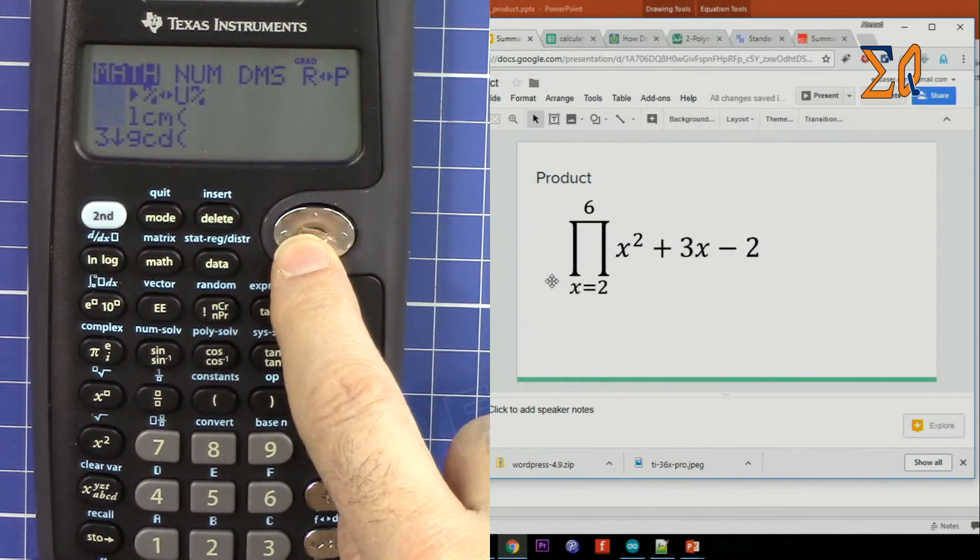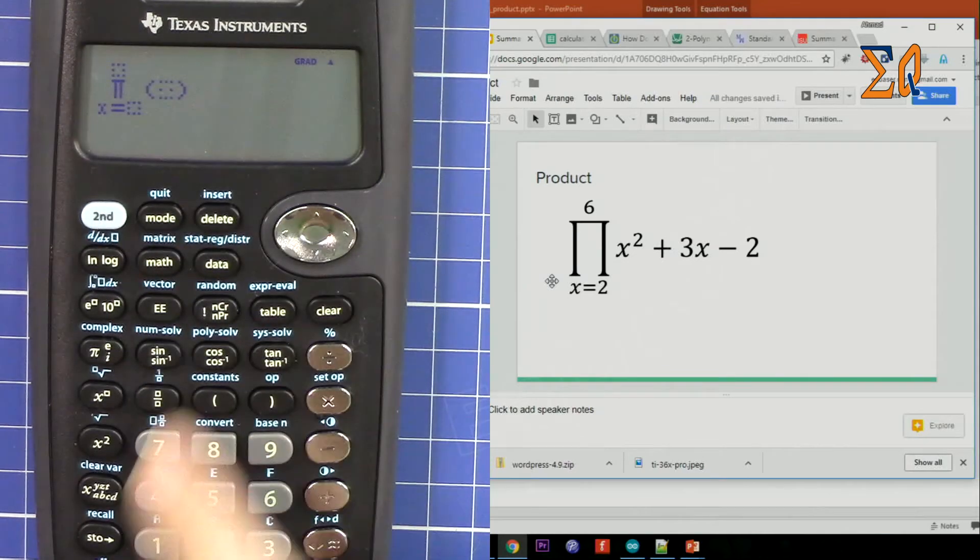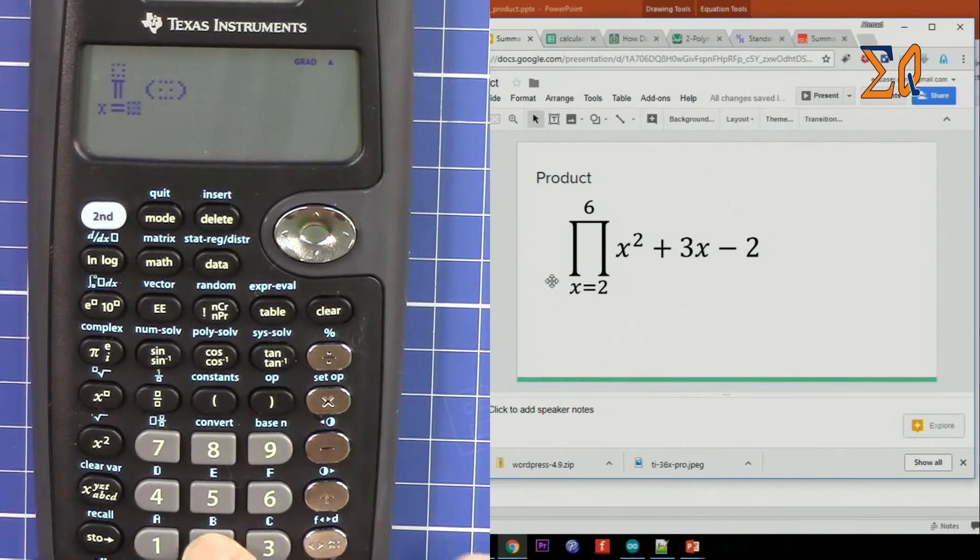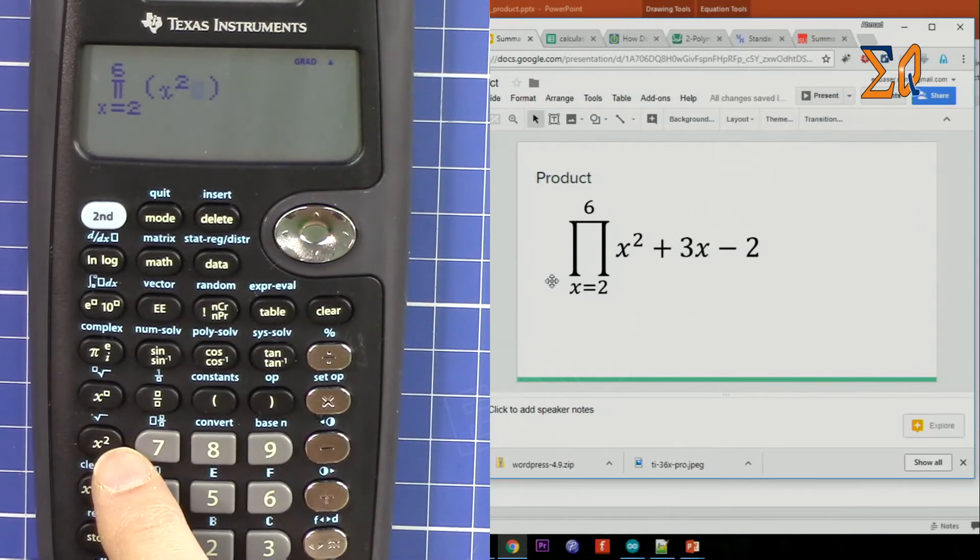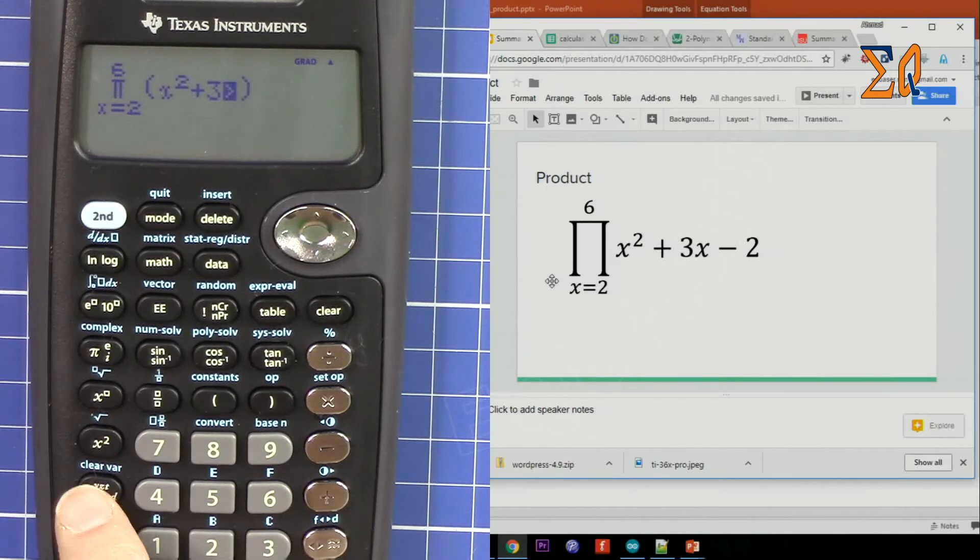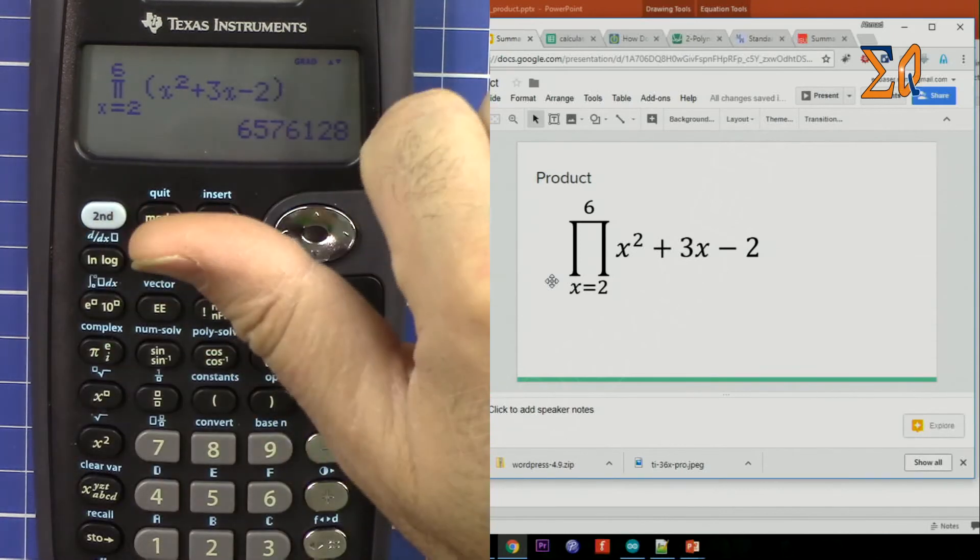Now the sign is here. So x is equal to 2. With the arrow, go to the top, 6. And then come here, x squared. I'm pressing that, plus 3, and then this button again, x minus 2, and then equal sign. That's the answer. Thank you for watching, thumbs up the video.